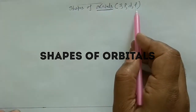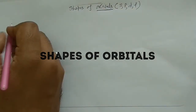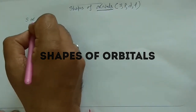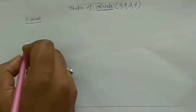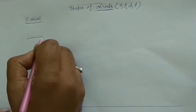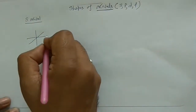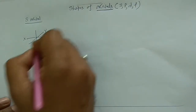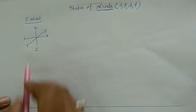Whatever orbitals there are, they would be distributed among these three coordinates. For example, if you look at the shape of the s orbital, this is your x axis, this is the y coordinate, and this is your z coordinate, with positive and negative directions for each.